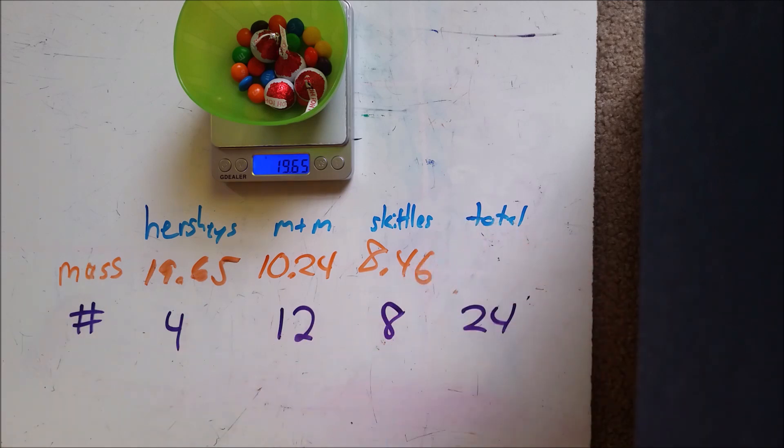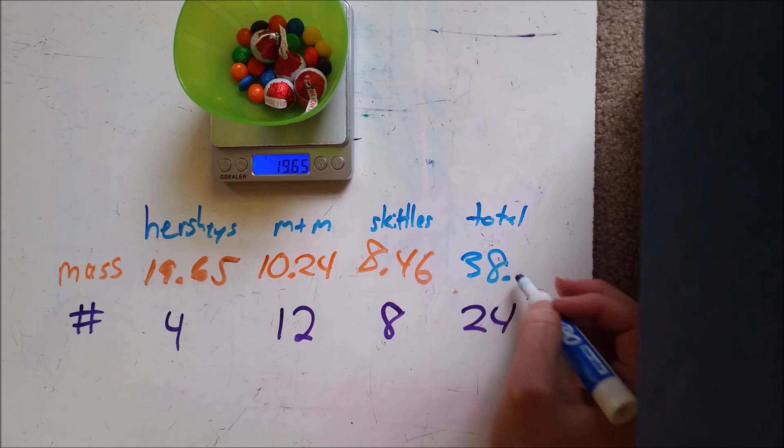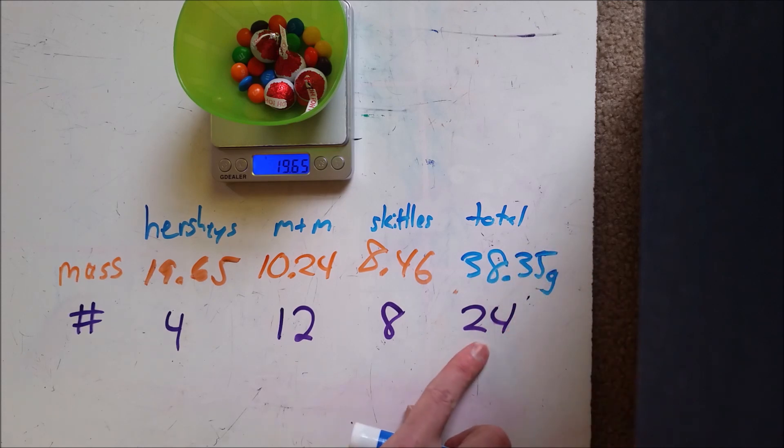total up all of those masses which comes out to be 38.35 grams, and I could say that that's 24 total pieces of candy. Therefore I could divide 38.35 divided by 24, which comes out to be 1.60 grams on average.